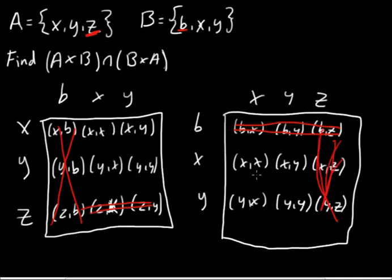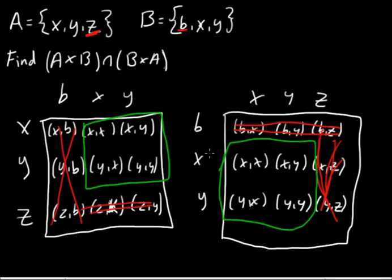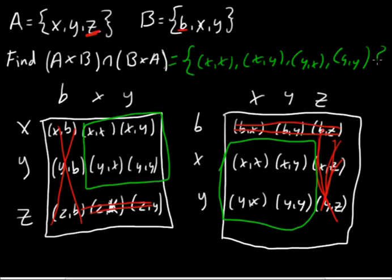That leaves you with only four elements, which are all shared elements. You can see obviously (X, X) and (Y, Y) are the most obvious, but you have (X, Y) and (Y, X), and you're also going to have those here too because they're shared elements. So then you have these four elements. Your solution here is going to be (X, X), (X, Y), (Y, X), and (Y, Y). And that is the intersection of these two Cartesian products.